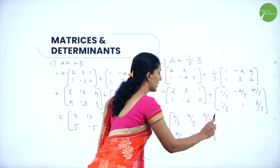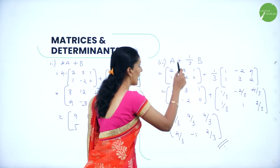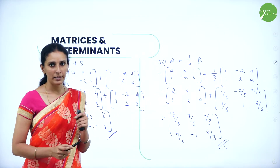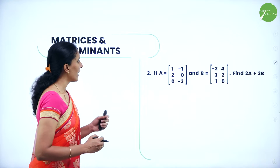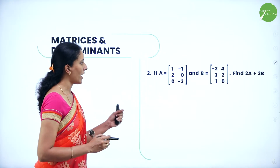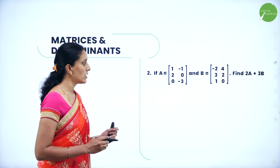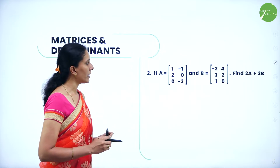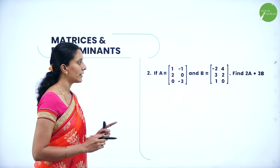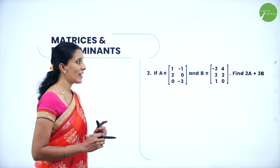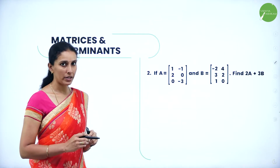Next, if A = [1, -1, 2; 0, 0, -3] and B = [-2, 4, 3; 2, 1, 0], find 2A plus 3B. First find 2A, then 3B, then add them.